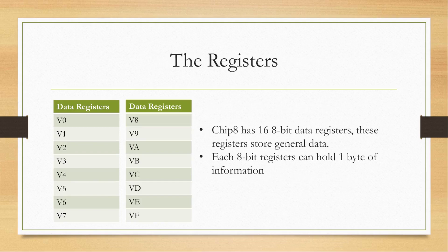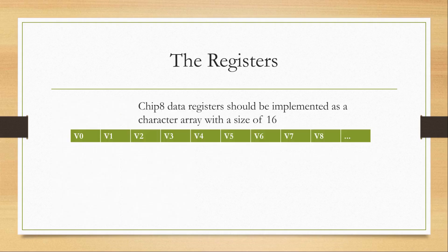The Chip 8 has 16 8-bit data registers. These are used to store general data such as the score in a game — for example, in Pong you could use these data registers to store how much score each team has. Because they are only 8-bit wide, they can only hold one byte of information per register. The Chip 8 data registers should be implemented as a character array with a size of 16, and we'll get more into the instruction set later.